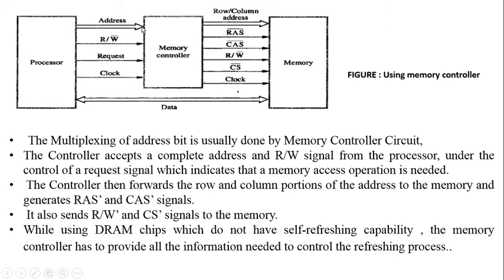The processor places address information, specifies whether to perform a read or write operation, and sends a request signal to the memory controller. After receiving the address and the read or write command, the controller separates the row address part and the column address part, forwards them to the memory, and generates RAS-bar and CAS-bar signals in order to start the decoding operation.